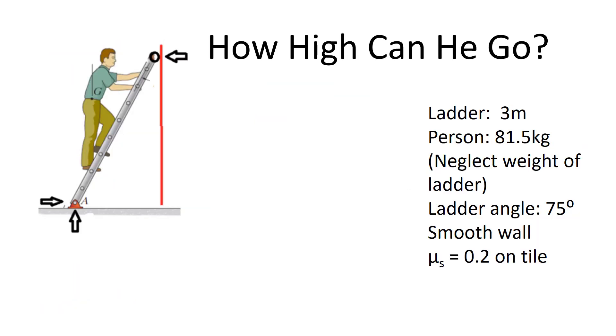So in this case, the question is, how high can he go? We've got a guy climbing a ladder. The ladder is three meters long. It is sitting on a fairly slippery surface. The coefficient of friction is only 0.2. And as you go up the ladder, the necessary friction increases. And at some point, there's a potential that this ladder could slip. So we're going to determine how high you can go before it slips.